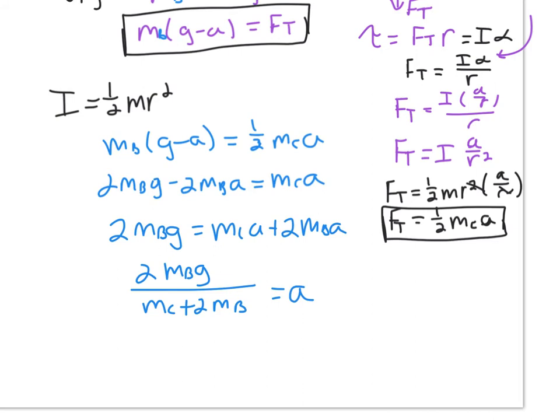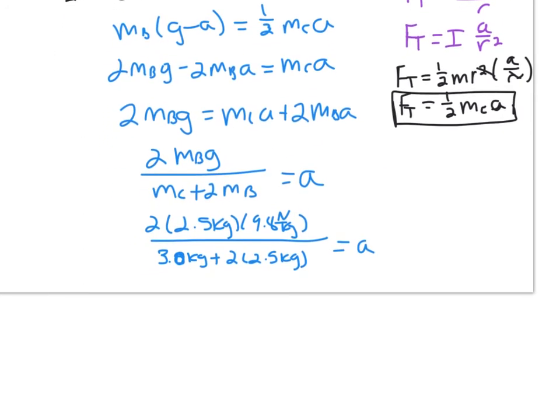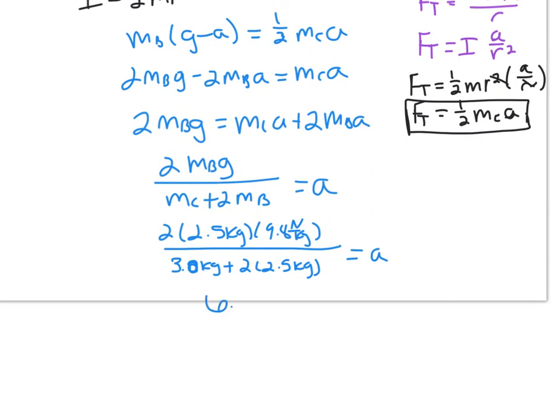This has been quite the algebra adventure. Two times the mass of the bucket, 2.5 kg, times g, 9.8 newtons per kilogram, over mass of the cylinder, 3.0 kg plus 2 times 2.5 kg equals my acceleration. So 2 times 2.5 is 5, 5 times 9.8 is 49, 49 divided by 8 is going to give us 6.125 meters per second squared for acceleration. This was a linear acceleration, not an angular acceleration, so it makes sense that this is what the units come out to.